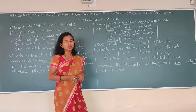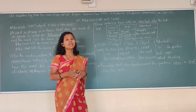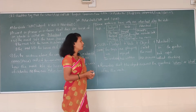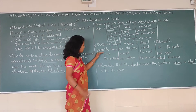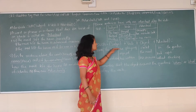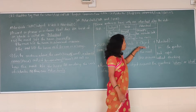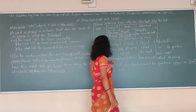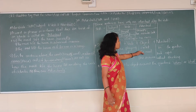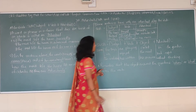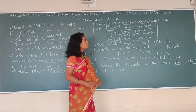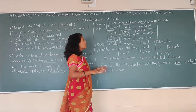There is also the SVOA structure — subject, verb, object, and adverbial. First example: the boys are playing cricket in the garden — cricket is the object and in the garden is the adverbial. Second: we enjoy the meal last night — the meal is your object and last night is your adverbial. Third: the candidate has written his answers without thinking — his answers is your object and without thinking is your adverbial.